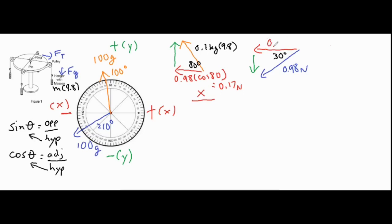We're going to do the same thing for the other one. We're going to take the hypotenuse of 0.98 newtons times the cosine of 30 degrees, and that's going to give us 0.85 newtons. So on the x side so far, we know that we have 0.17 newtons that's pointing to the left.